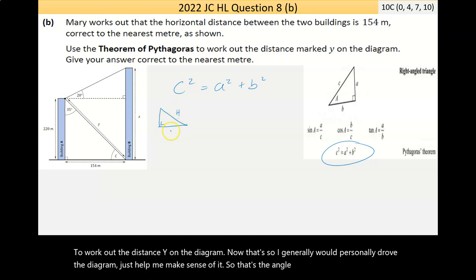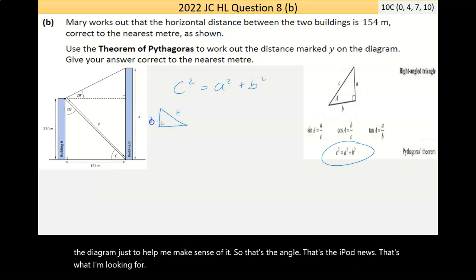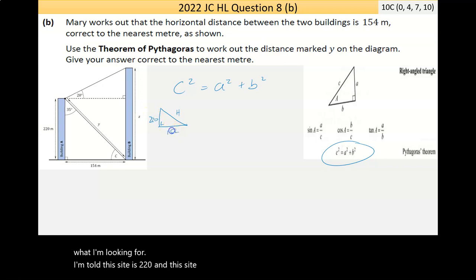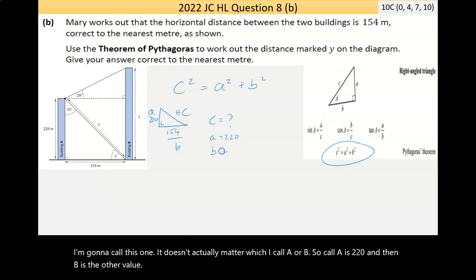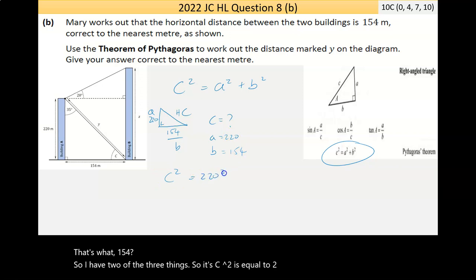I generally would personally draw out the diagram just to help me make sense of it. So, that's the right angle. That's the hypotenuse. That's what I'm looking for. I'm told this side is 220, and this side here is 154. Now, I personally use the hypotenuse, but that in the formula is the C value. So, if I know that C is what I'm looking for, I'm going to call this one A. It doesn't actually matter which I call A or B. So, I'm going to call A is 220, and then B is the other value. So, that's 154. So, I have two of the three things. So, it's C squared is equal to 220 squared plus 154 squared.